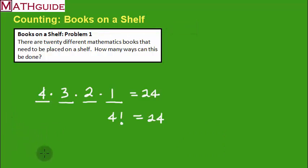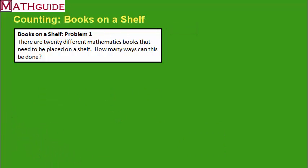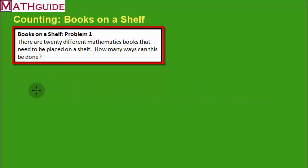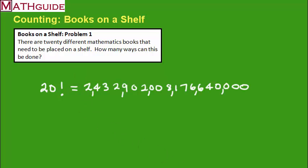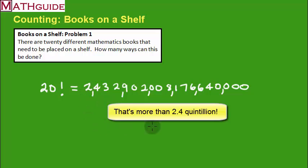Now let's go back to the original problem. No longer four textbooks — there are 20 books. You've got to imagine 20 slots on the shelf. Instead of drawing them all out, I'll use factorials and a calculator. The answer is approximately two quintillion ways to arrange those textbooks on a shelf — way more than you probably thought.